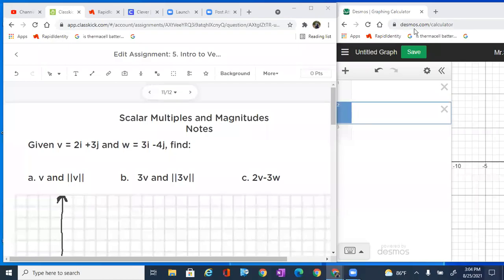Given the horizontal and vertical components of vectors, we're going to use that information to find magnitudes and then also find magnitudes when scalars are attached to those vectors. So let's go ahead and look at a and b only in this video.